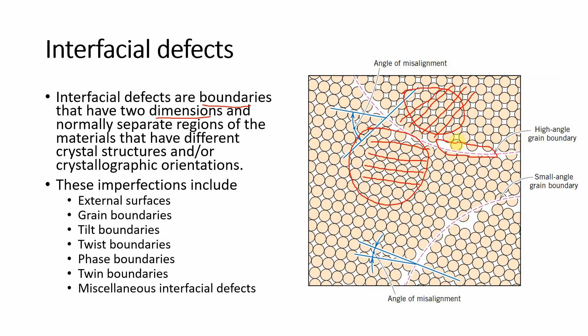If it were a straight line, it would be one-dimensional; if it were a dot, it would be zero-dimensional. Two-dimensional defects separate two regions of different crystallographic orientations. These imperfections include external surfaces, grain boundaries, tilt boundaries, twist boundaries, phase boundaries, twin boundaries, and interfacial defects.